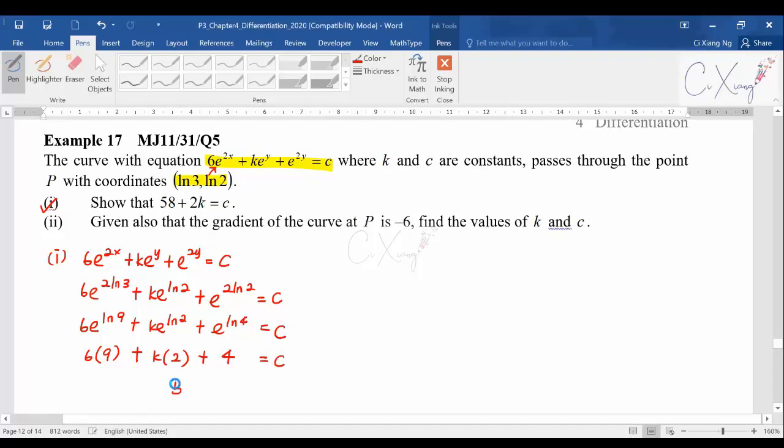When you simplify everything you will successfully get the answer they want you to show, which is 58 + 2k = c. Again, all the rules here like e^(ln9) should get 9 - we learned this in Chapter 2. No matter what, you can use the calculator to just press and get the answer.